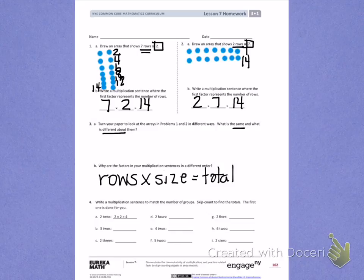Number 4. Write a multiplication sentence to match the number of groups. Skip count to find the totals. Their first one is done for you. On letter A, I see I have two 2's. So they wrote a multiplication sentence saying 2 times 2 equals 4.